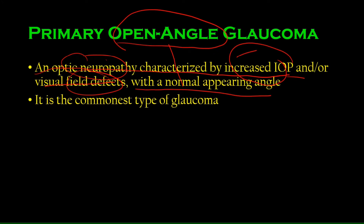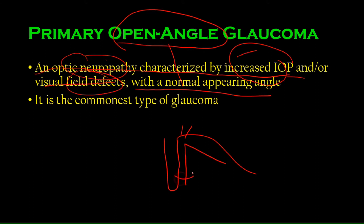When the iridio-corneal angle is normal and open, it's an open-angle glaucoma. We saw the iris and the cornea, with the drainage system at this angle right here. If the iris moves into a position that closes this angle, that would be a closed-angle or angle-closure glaucoma.